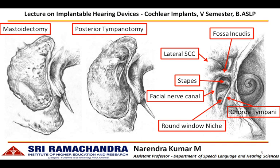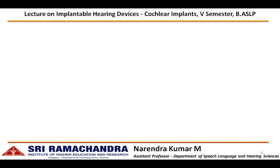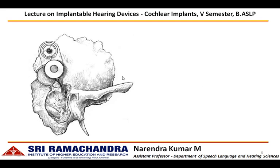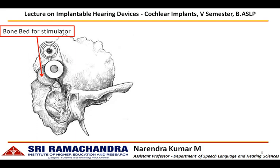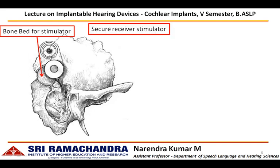Once the middle ear cavity is exposed and the surgeon has a good view of the round window, the surgeon starts to drill the cortical bone to create a bone bed for the stimulator. The receiver and stimulator is held snugly under the retraction pocket. If required, fasteners can be used to secure the receiver-stimulator on the cortical bone.